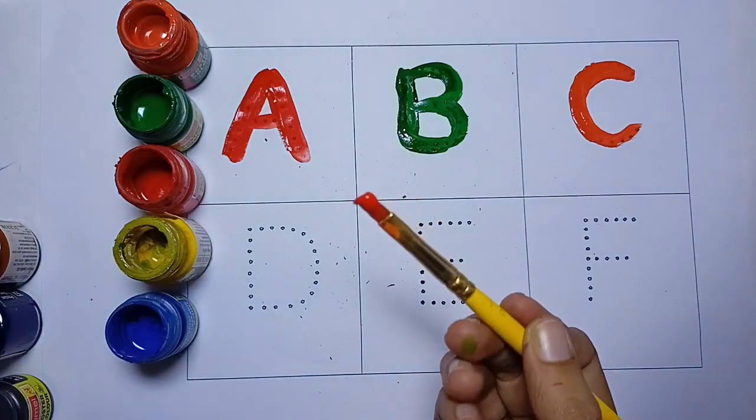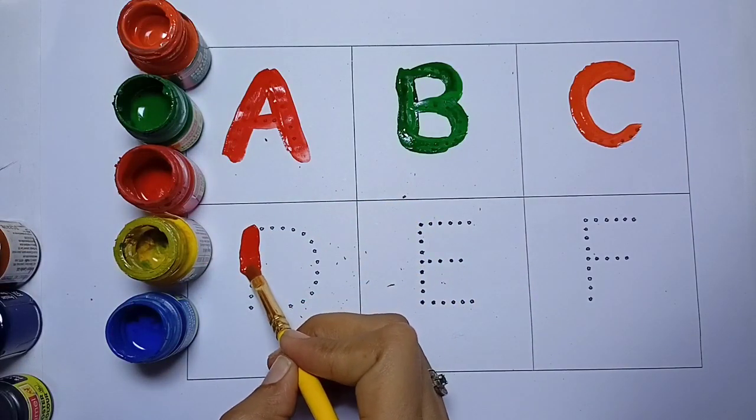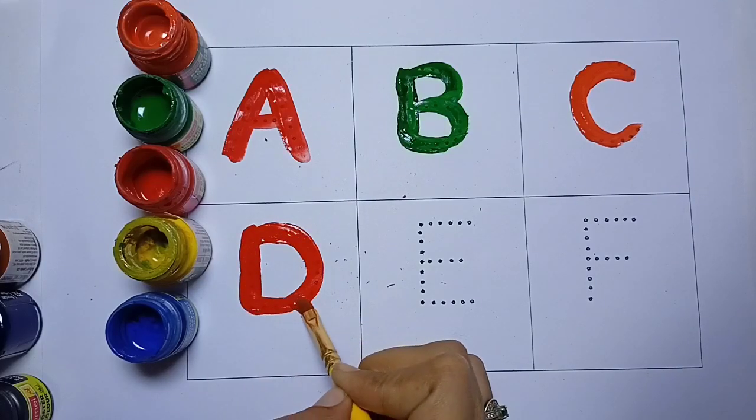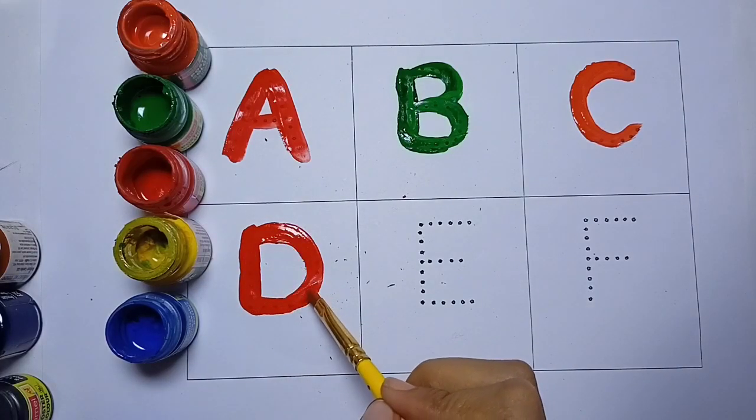Red color. D. D for dog. Dog means cat. Red color.